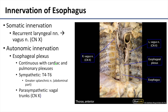There is differential innervation of the esophagus based on muscle type. The superior portions of the esophagus, which are striated muscle, are going to be innervated by the recurrent laryngeal nerve, which is a branch of the vagus nerve. The smooth muscle is innervated by the esophageal plexus, and it's important to note that this is continuous with the more superior cardiac and pulmonary plexuses.